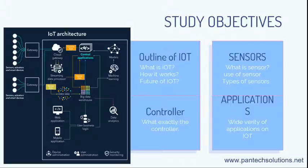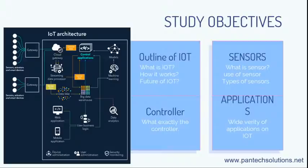API key is nothing but — if you are taking one cloud account, they will give some API keys. For example, if you are using Twitter, Twitter has a separate developer account. Based on the developer account, you can log in and they will give some API keys — public key, user key. Based on those keys, if you give them in your program, it will retrieve data from Twitter also.